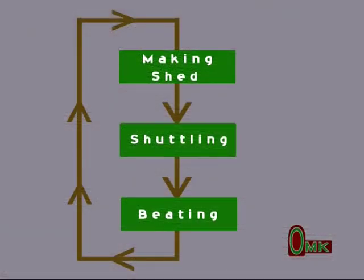With the demo kit, we made a short and loose fabric with uneven texture. A loom is a sophisticated version of the demo kit to make continuous fabric with uniform texture by executing the steps in sequence as shown in the flowchart: making shed, shuttling, and beating. This cycle is repeated till the fabric is woven.